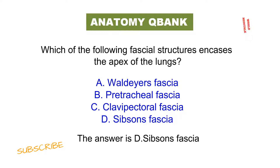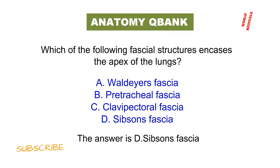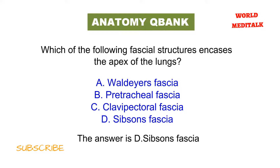The suprapleural fascia runs from the 7th cervical vertebra to the first rib and overlies the apex of the lung on both sides. It lies between the parietal pleura and the thoracic cage.